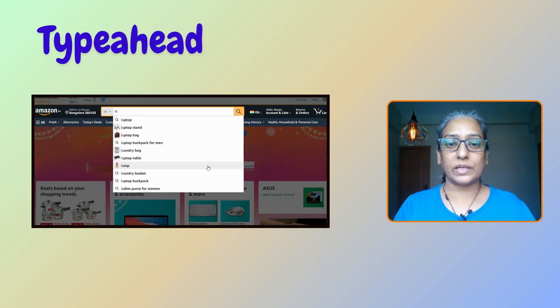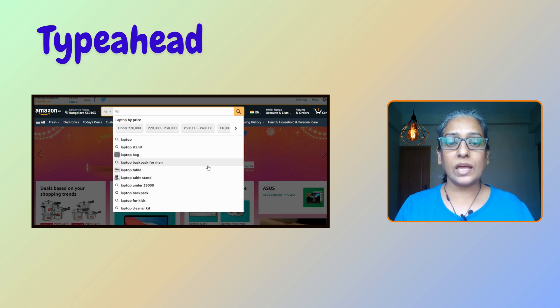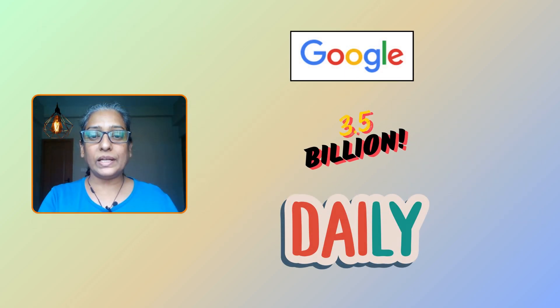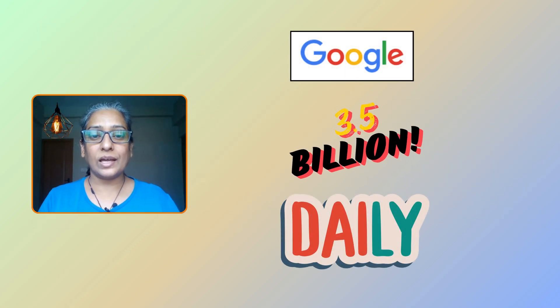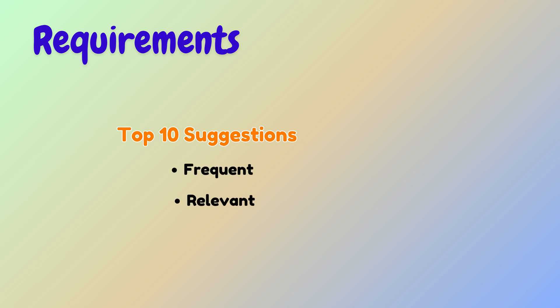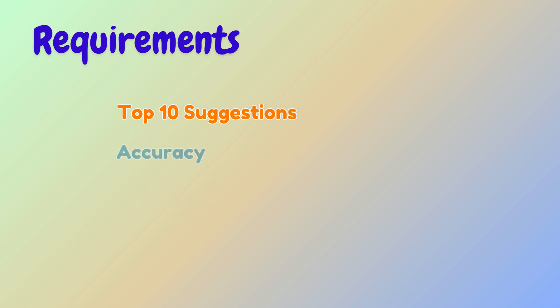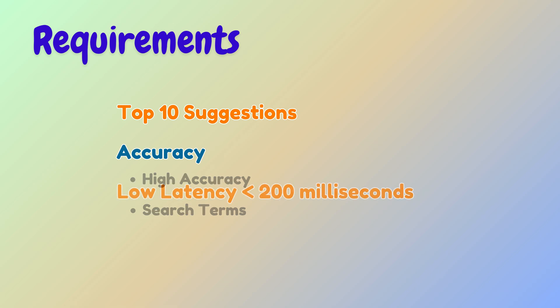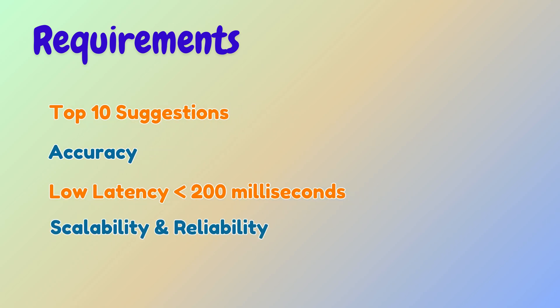A type-ahead system enhances user experience by providing real-time suggestions as users type in the search box. Building this system for Google's scale, which handles billions of searches per day, introduces challenges. Let's start by outlining the key requirements — both functional and non-functional. The system must provide the top 10 frequent and relevant terms as suggestions, ensure high accuracy, and the response time should not exceed 200 milliseconds.